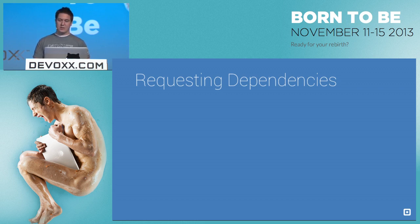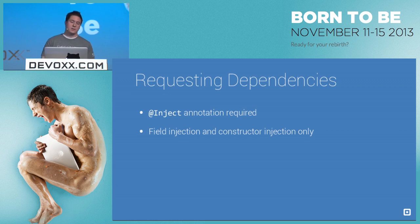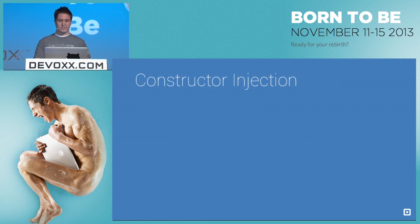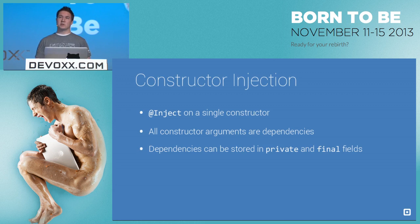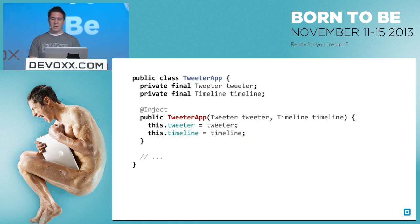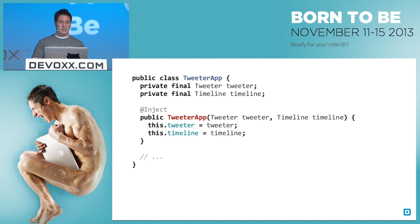So we're now providing dependencies. How do we get those into our classes? We use the @inject annotation — this is required and also what Dagger uses for statically analyzing how your dependencies are used. We can only use field and constructor injection with Dagger. There's also method injection in Guice which allows you to inject dependencies into method calls, but that's not supported. With constructor injection, you can only have a single constructor that takes @inject. The arguments that constructor takes are implicitly the dependencies it requires. The advantage is that because it's in the constructor, you can store those dependencies in private final fields.